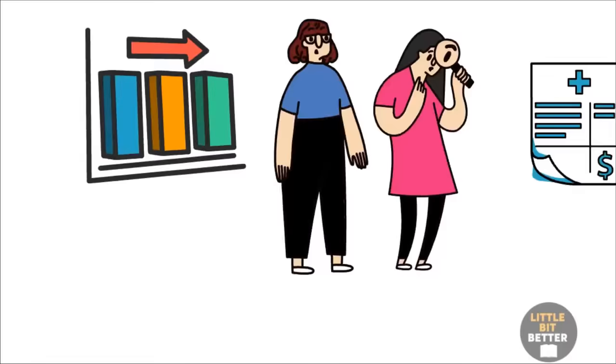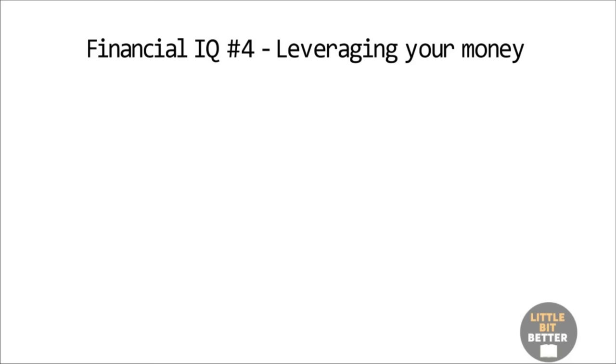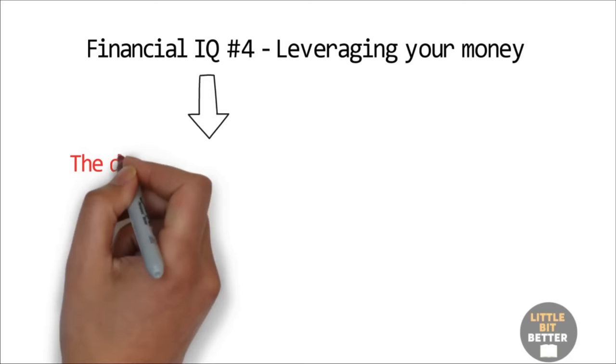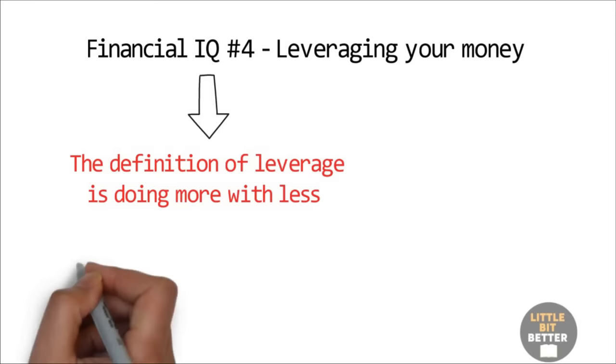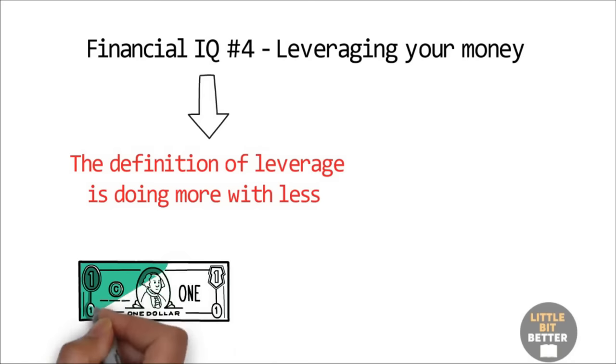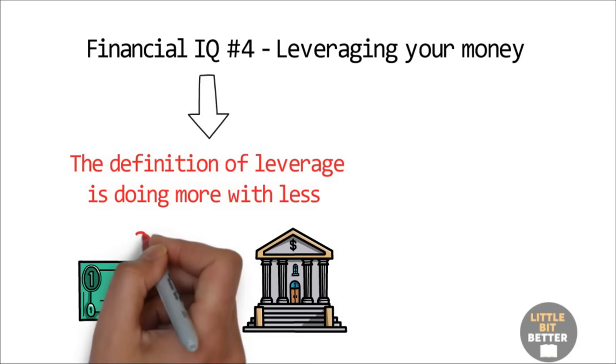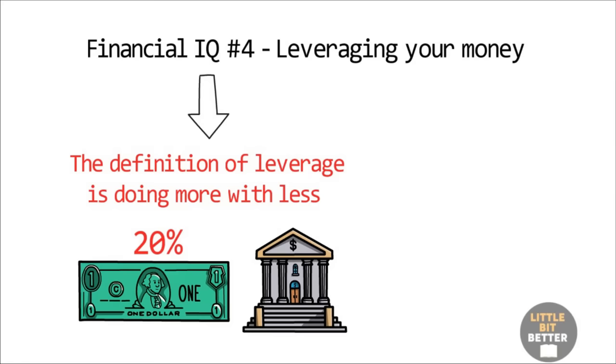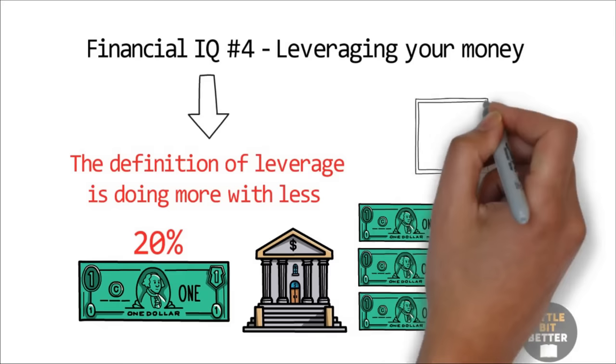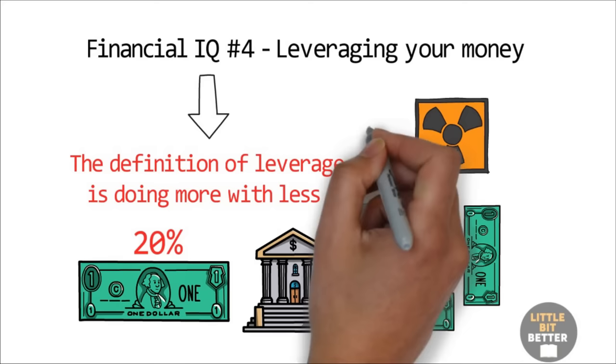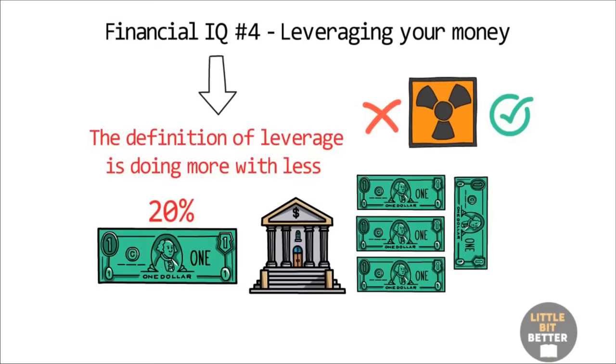Financial IQ number four, leveraging your money. In very simple terms, the definition of leverage is doing more with less. A person who puts money in the bank into a savings account has no leverage. It's the person's money. Compare this with buying a property. If banks require you to put down 20% for the purchase of a property, it means for every dollar you put in, the bank puts in $4. Leverage helps you to earn higher returns. Many financial advisors will tell you that leverage is risky. Kiyosaki thinks that is absolutely false. Leverage is risky only when people invest in assets that they have no control over. The key word here is control.